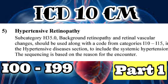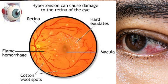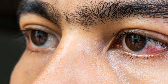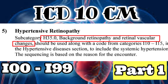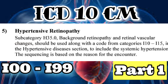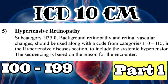The fifth point: hypertensive retinopathy. Retinopathy is damage to the blood vessels and light-sensitive tissue at the back of the eye — the retina — which may lead to blurred vision or blindness. For hypertensive retinopathy, code subcategory H35.0, background retinopathy and retinal vascular changes, along with a code from I10 to I15 to denote systemic hypertension. Sequencing depends on the reason for encounter: H35.0 first if treating retinopathy, or I10–I15 first if treating hypertension.